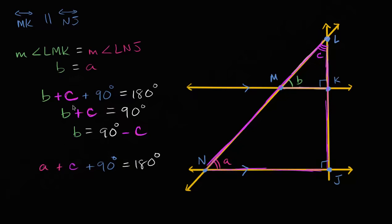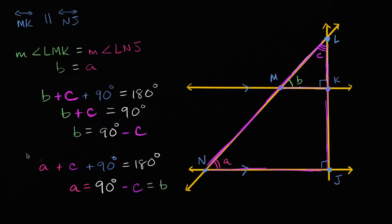We can do the exact same process to solve for A. If we subtract 90 from both sides and subtract C from both sides, we get A is equal to 90 degrees minus C. Now this is interesting: B is equal to 90 degrees minus C, and A is equal to 90 degrees minus C. So we can now say that A must be equal to B — that the measure of angle LMK, which is B, is equal to the measure of angle LNJ, which is A.